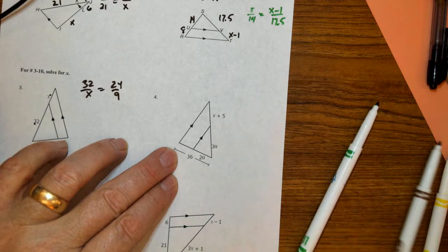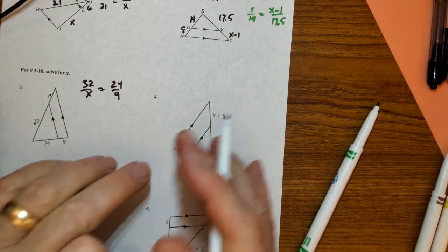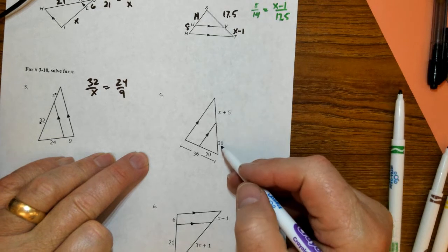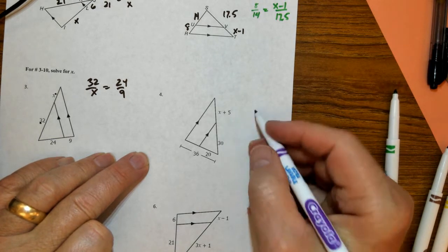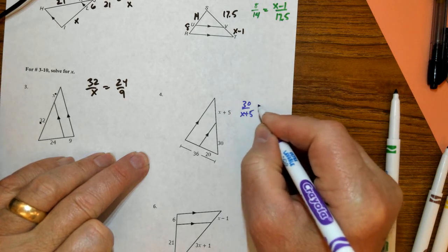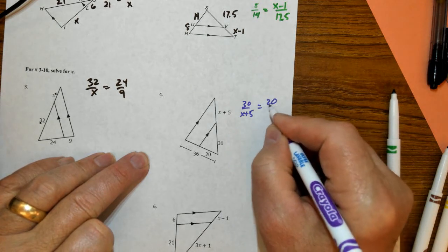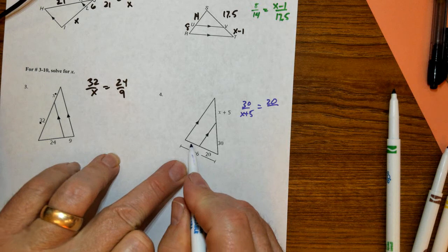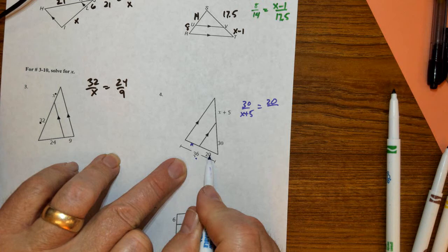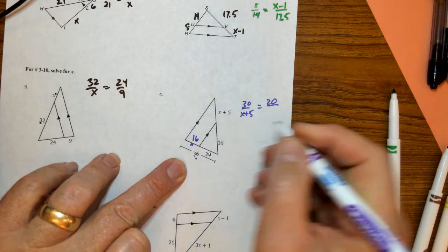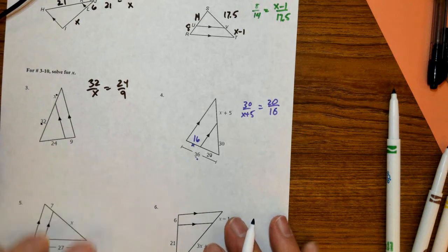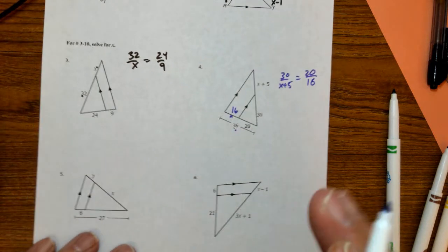This one, I'm going to set all these up. You can do the cross products. So this one, I can go 30 is to X plus 5 as 20 is to, well, you've got to figure out what this portion is. So this is part plus part equals whole. So you've got to subtract the difference. So 36 subtract 20. This is 16. Do your cross product, solve for X.